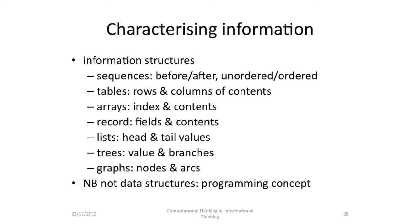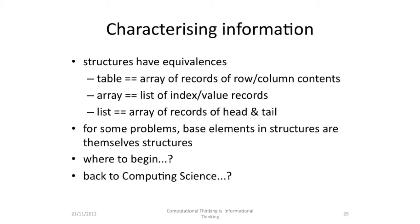We put our things together using information structures, and we're familiar with lots of these. There are sequences where we've got ideas of before and after, and things being ordered and unordered. We've got tables with rows and columns of contents. We've got arrays where we get at the contents by an index. We've got records where we get at the contents by a field. We've got lists with heads and tails. We've got trees with values and branches. And we've got graphs with nodes and arcs. But these are not data structures — these are programming concepts. They're information structures. And structures have got equivalences: a table can be an array of records; an array can be a list of index and value records; a list can be an array of records of heads and tail. And for some problems, the base elements in the structures are themselves structures. So where do we begin? We absolutely don't have to go back to computing science.